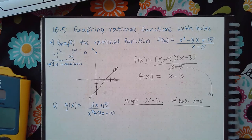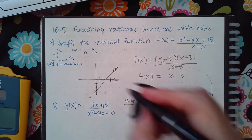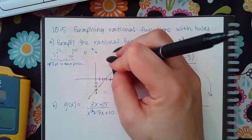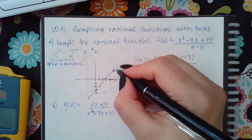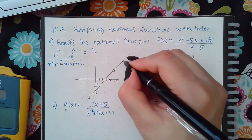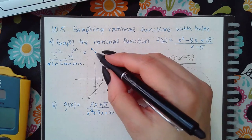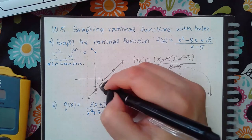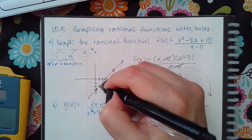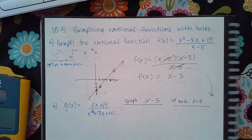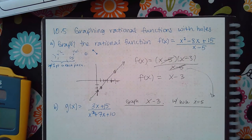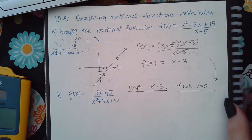So the answer is just this line. I select the line tool, mark two points — the y-intercept at negative 3, then up 1 over 1 — and then put the hole at x equals 5.